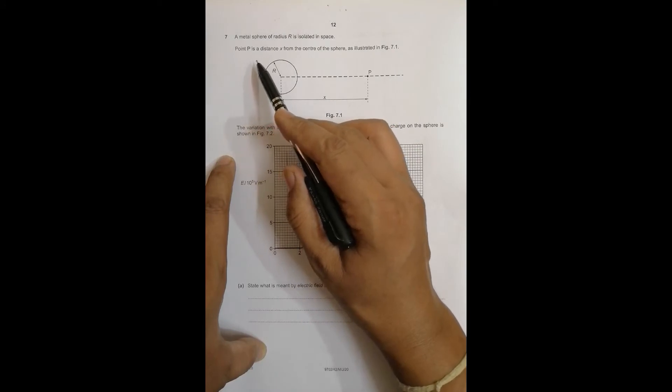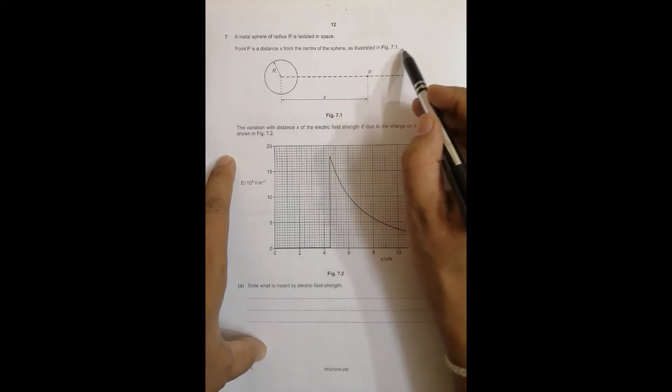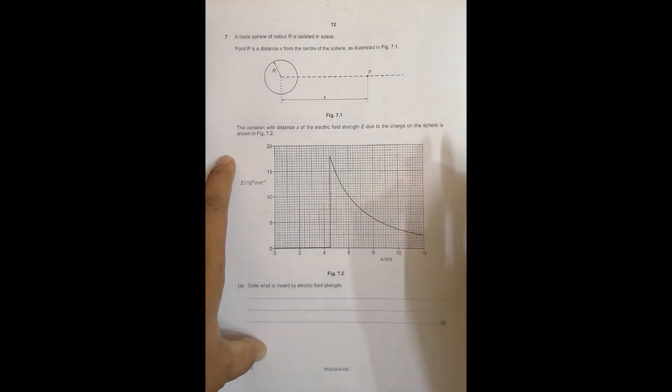Point P is a distance X from the center of the sphere as illustrated in figure 7.1. The variation with distance X of the electric field strength E due to the charge on the sphere is shown in figure 7.2, as you can see here.